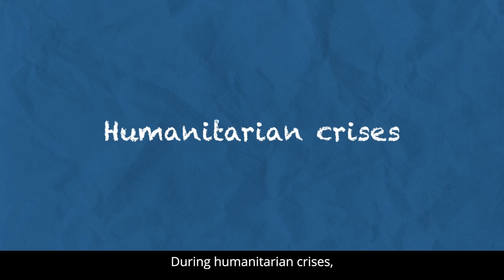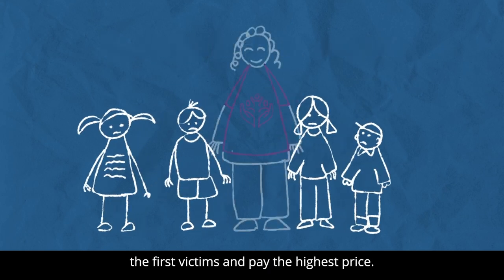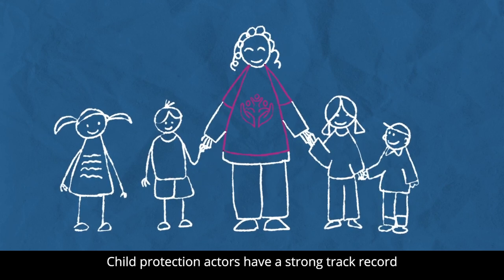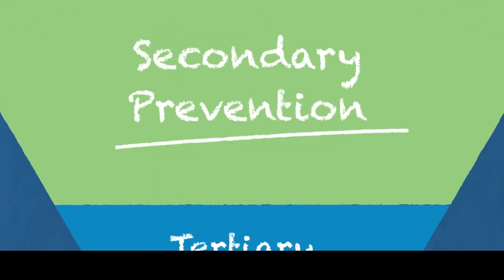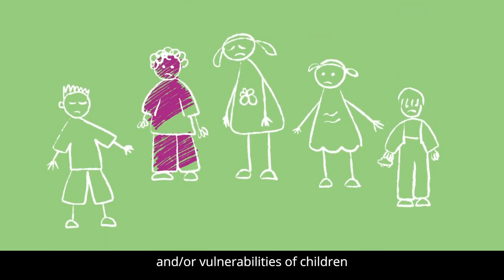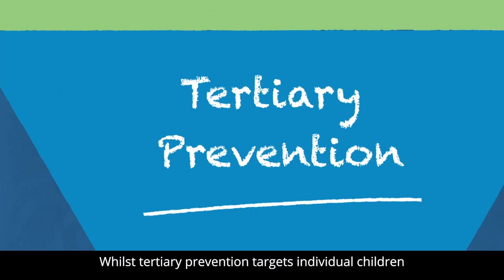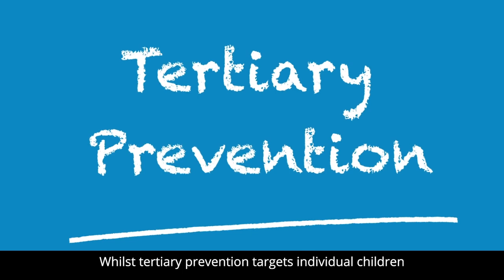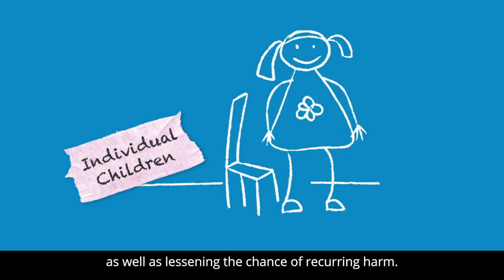During humanitarian crises, children are often the first victims and pay the highest price. Child Protection Actors have a strong track record of implementing secondary and tertiary prevention strategies in these situations. Secondary prevention addresses a specific threat and or vulnerabilities of children identified as being at high risk of harm, whilst tertiary prevention targets individual children who have experienced harm and aims to reduce the longer-term impact of that harm on the child, as well as lessening the chance of recurring harm.